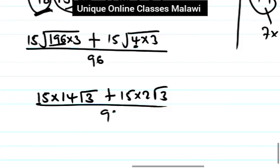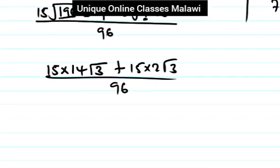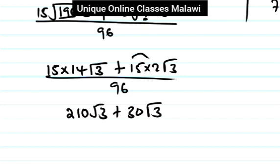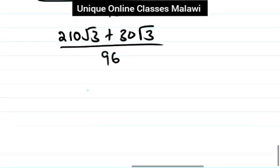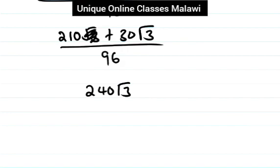Divide by 3. Then 14 times 15 gives 210. So we can do 210. Then 4 times 6, 2 times 6, 3 times 6, 2 times 6, 3 times 6 — 96. Now there is a number on 96.